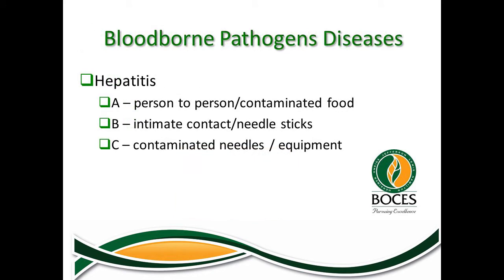We typically look at three types of hepatitis: hepatitis A, B, and C. Hepatitis A can be spread through person-to-person contact. Hepatitis B can be spread through intimate contact or needle sticks. Hepatitis C can be spread through contaminated needles and equipment.